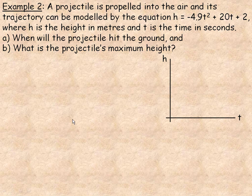Flipping over to the last example, we have a projectile that is propelled into the air and its trajectory can be modeled by this equation. The height is negative 4.9 times the time squared plus 20 times the time plus 2, where h is the height in meters and t is the time in seconds. We are asked two questions: when will the projectile hit the ground, and what is its maximum height?